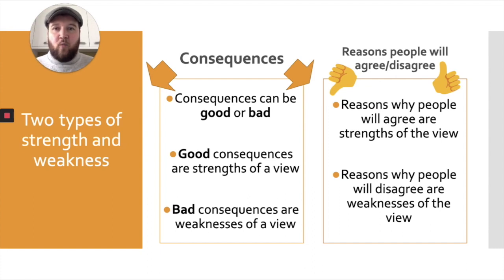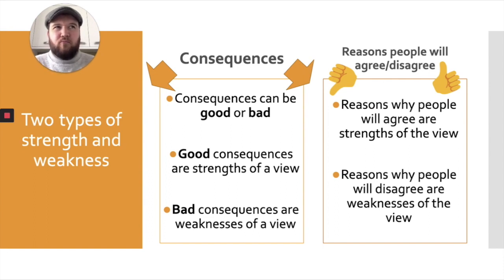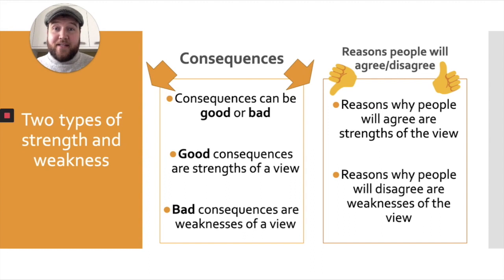Think about Amnesty International — why would people agree with them? That's a strength of their argument. Think about who they are, think about organizations and so on. There you have some reasons why people will agree — those are strengths. Now have a think about why people would disagree with Amnesty International and disagree with banning the death penalty. Those reasons why people disagree with the viewpoint will be weaknesses of the viewpoint. So that's it — it's as easy as that. I'll talk you through a couple of examples of strengths, a couple of examples of weaknesses, and that's us done.